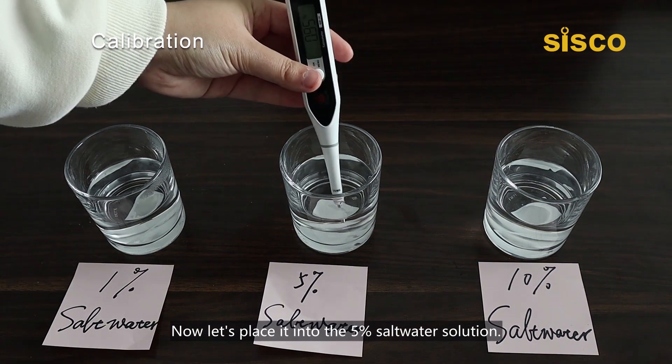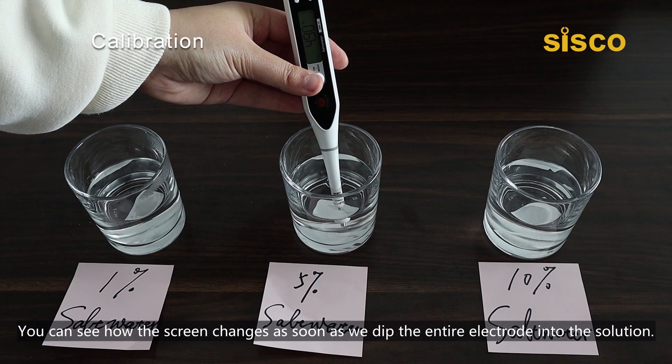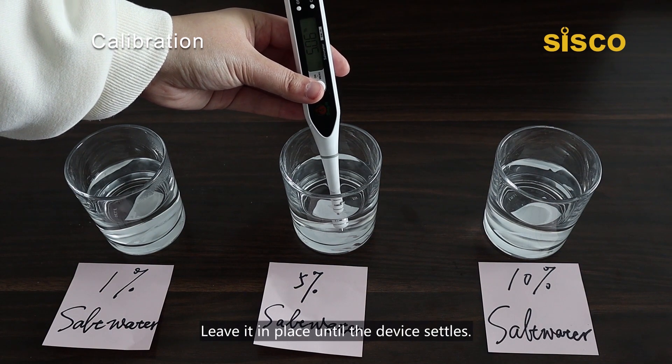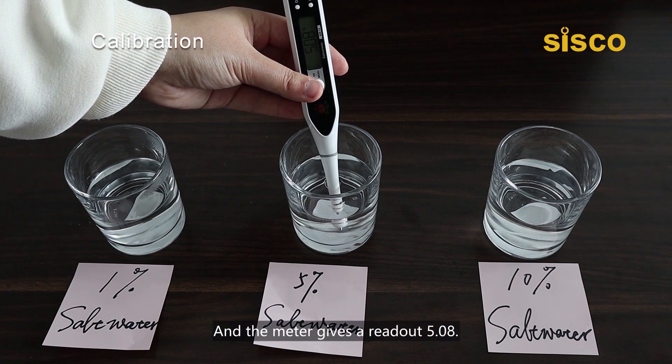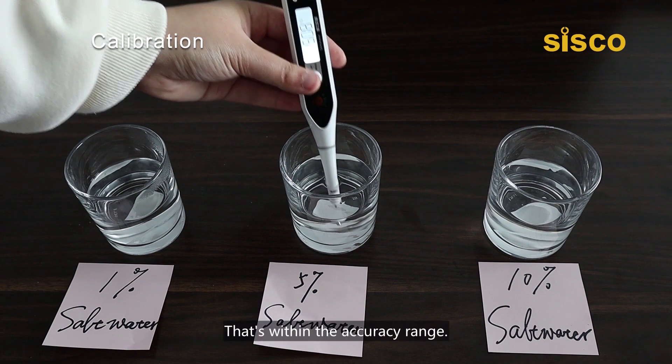Now let's place it into the 5% salt water solution. You can see how the screen changes as soon as we dip the entire electrode into the solution. Leave it in place until the device settles. The meter gives a readout, 5.08, that's within the accuracy range.